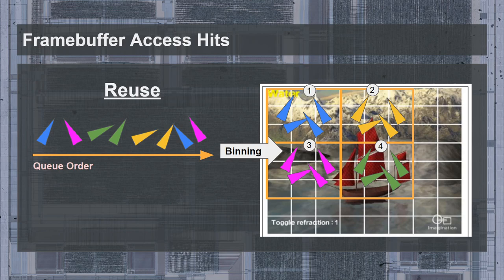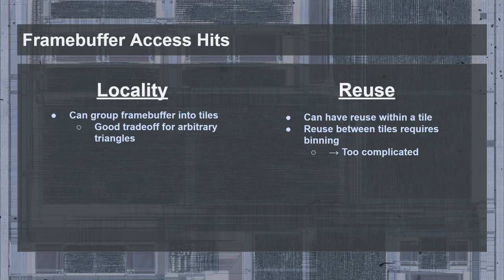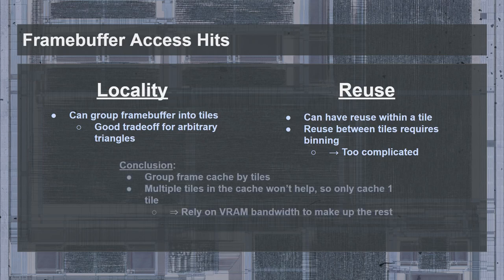In fact, the current implementation is hierarchical in nature, which allows for different bins to be processed asynchronously and in parallel. In the context of late 1990s GPUs, locality can be achieved by grouping the frame buffer into small tiles, which provides a good trade-off for arbitrarily oriented triangles. Reuse can only be achieved within a tile, where extending beyond a tile requires binning, which turns out to be a very involved and intensive process. This leads to the conclusion that a frame cache should be grouped by tiles, but multiple tiles in a frame cache won't really provide an improvement — you would effectively need to store the entire frame buffer in the cache, making the VRAM unnecessary.